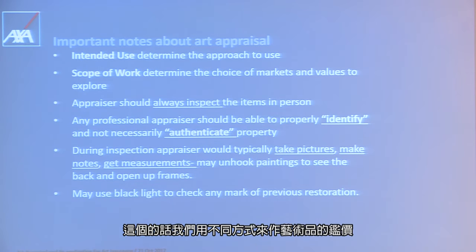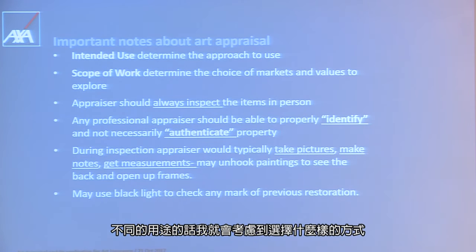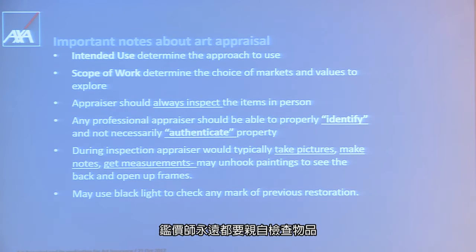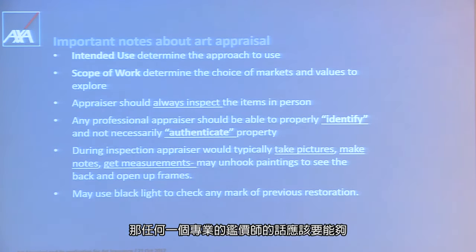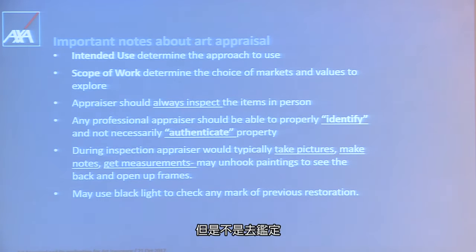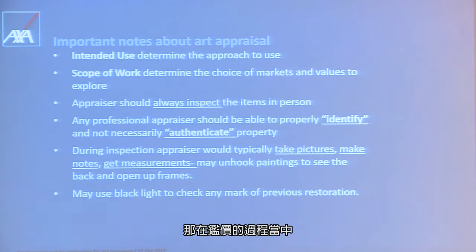Some important notes about art appraisals: the intended use determines the approach to use. The scope of work determines the appraiser's choice of market and values to explore. The appraiser should always inspect items in person; otherwise, they must make clear in the report that all information is based on what the client provided, which insurance companies may not always accept. Any professional appraiser should be able to properly identify but not necessarily authenticate property. Identification is the scientific determination of an object — measurements, appearance, weight — while authentication is a scholarly determination of whether something is real or fake, which is usually not within the scope of an appraiser's duties.